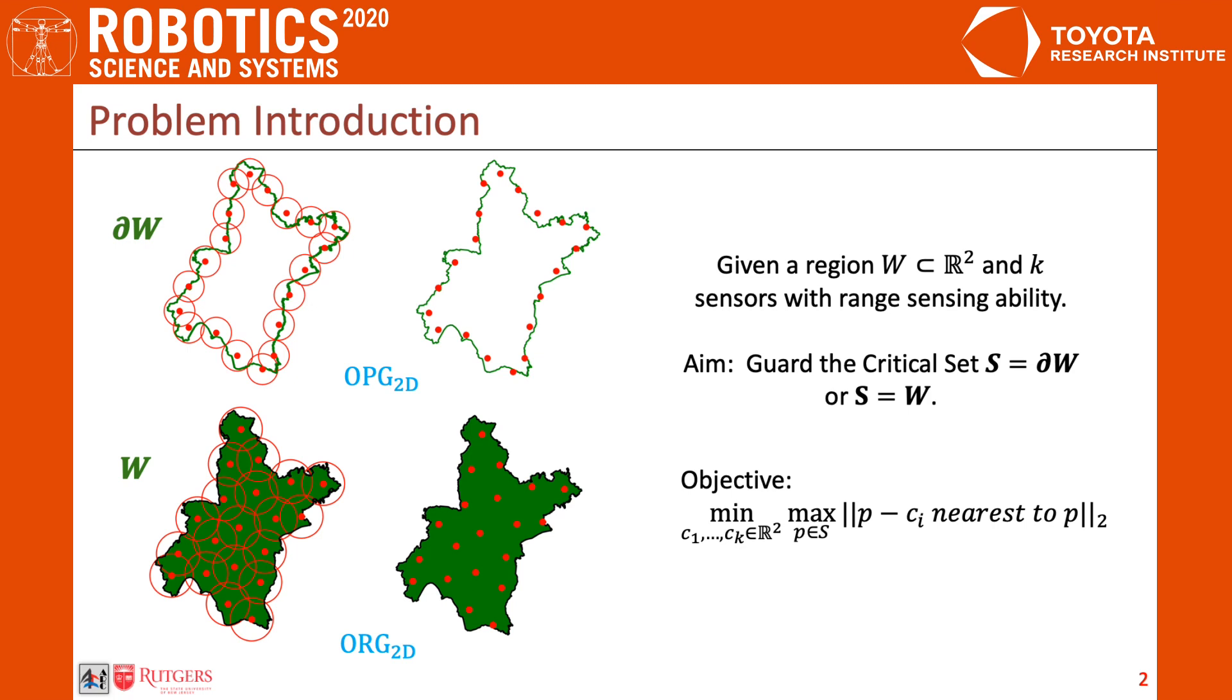Note that if the critical set to guard is zero-dimensional, or a finite set of points, the problem becomes exactly the well-known geometric K-center problem. This formulation studies a K-center-like problem with a continuous flavor.